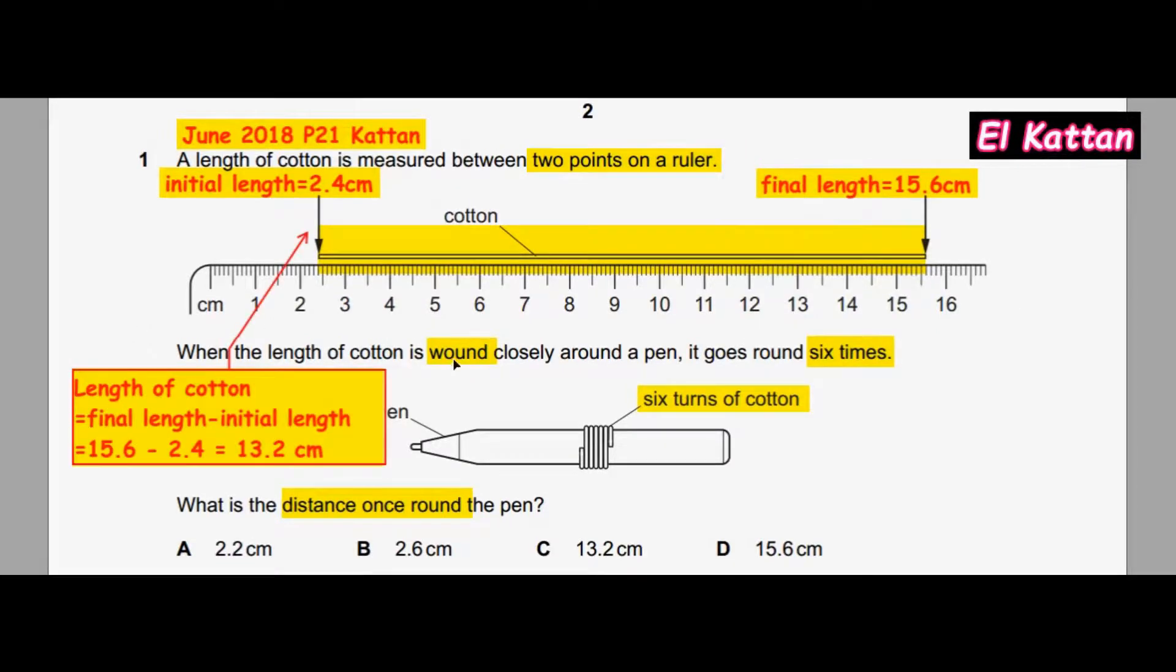Length of cotton equals final length minus initial length: 15.6 minus 2.4 equals 13.2 centimeters.